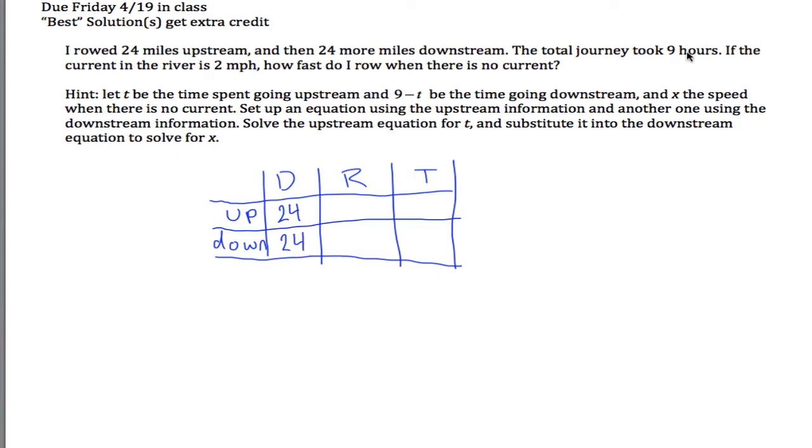The total journey took 9 hours. If the current in the river is 2 miles per hour, how fast do I row when there is no current? You might be able to fill out the rest of the information already, but it would be pretty hard to do, so I gave you a little hint. I said let t be the time spent going upstream, so they're saying make this little t right here, and 9 minus t, the time going downstream. So that's how we can write algebraically that the total journey took us 9 hours. This took us some amount of time, and then this took us the rest of the time, 9 minus however much it took us to go upstream.